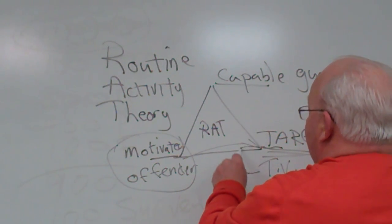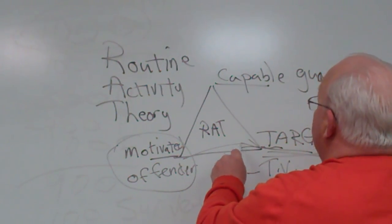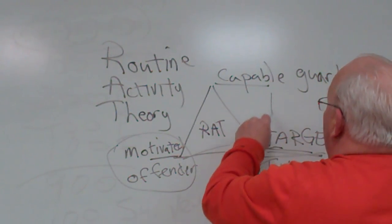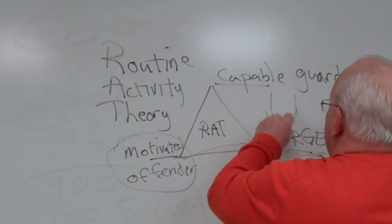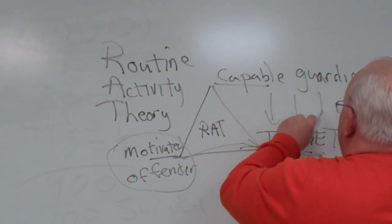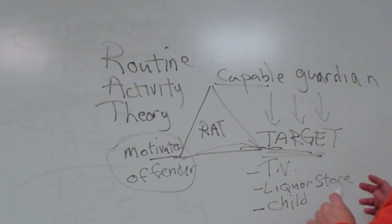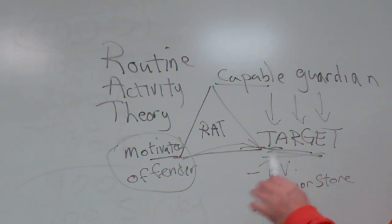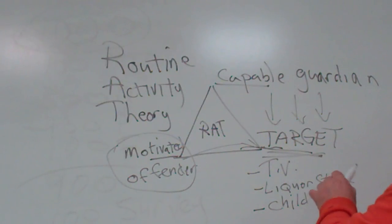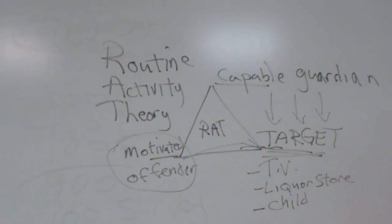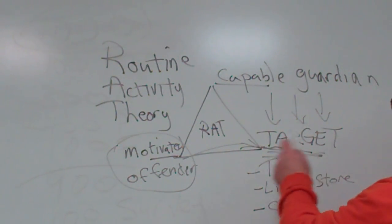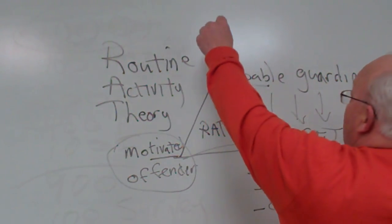So as a motivated offender seeks to come over here and attack this target, the capable guardian comes down and basically scares away the motivated offender, protecting the target. Now what is a capable guardian?